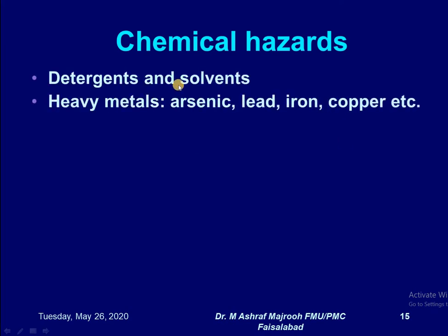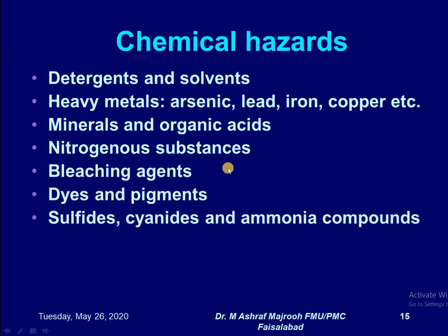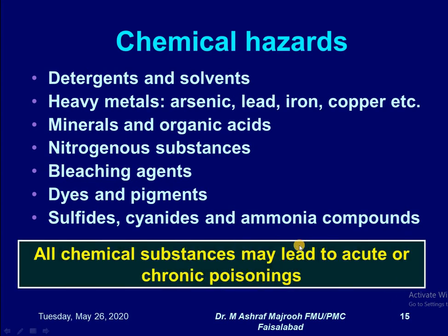Chemical hazards include detergents and solvents. Heavy metals such as arsenic, lead, iron, and copper cause heavy metal poisoning. Mineral and organic acids, nitrogenous substances, bleaching agents, dyes and pigments, sulfides, cyanides, and ammonia compounds are all present in water and cause health hazards. All chemical substances may lead to acute and chronic poisoning.